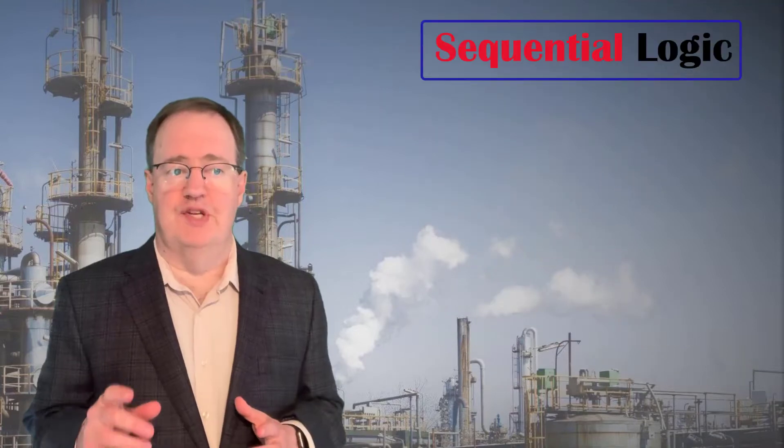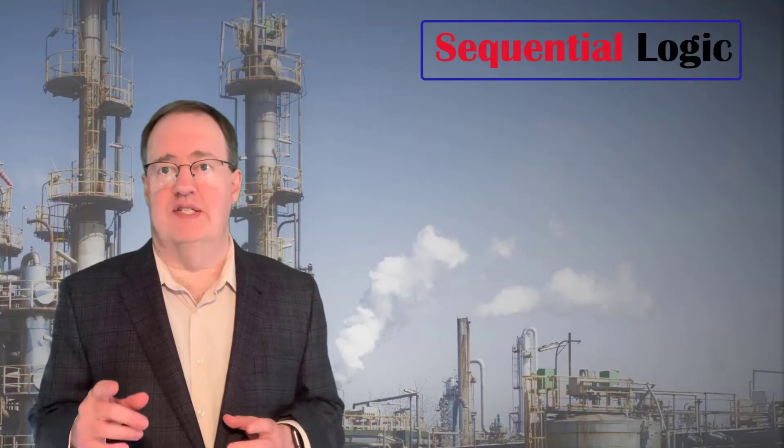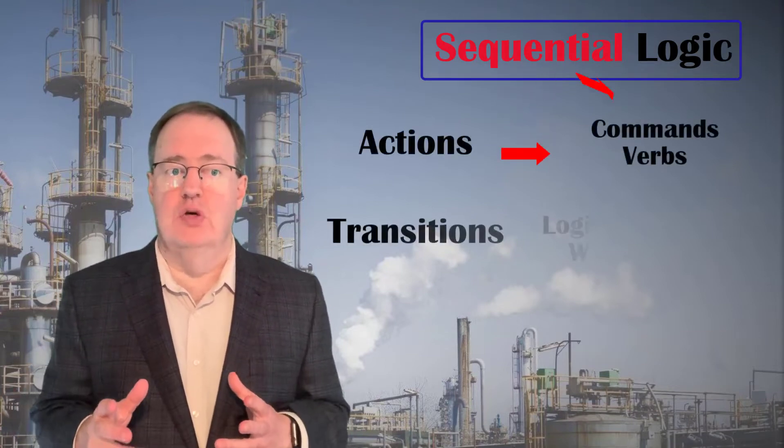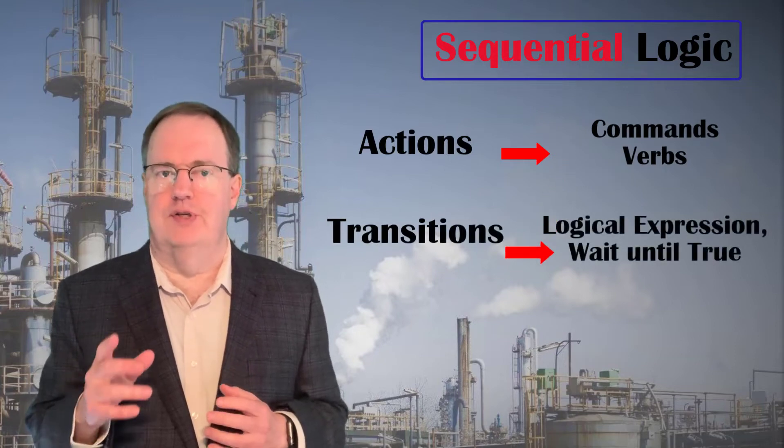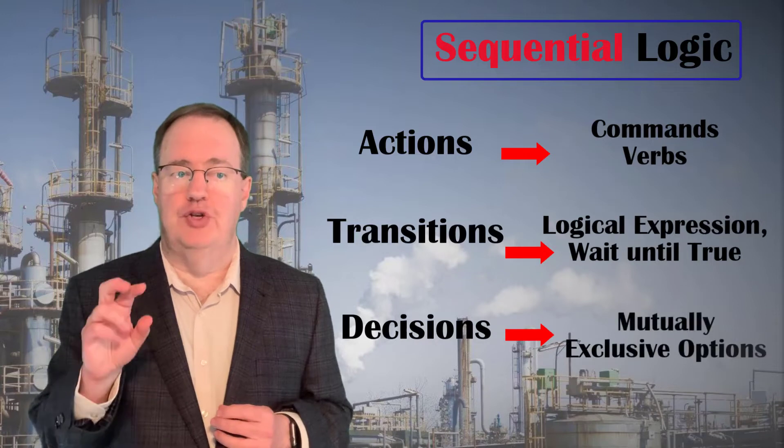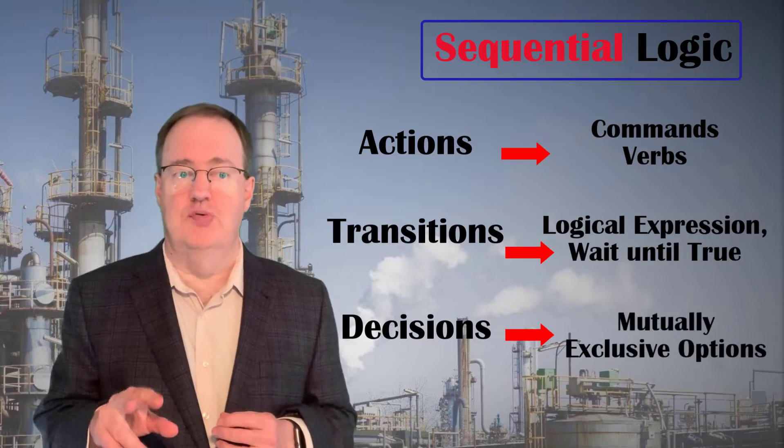To describe this in sequential logic, we need to break this down into three elements. Actions, which are things we do. Transitions, which are conditions we wait for until they're true. And decisions, where we make a choice between two or more mutually exclusive options.